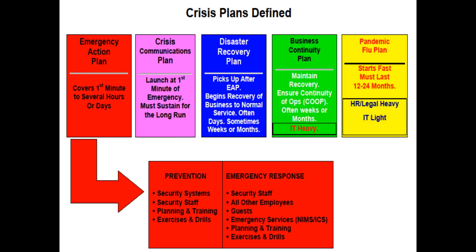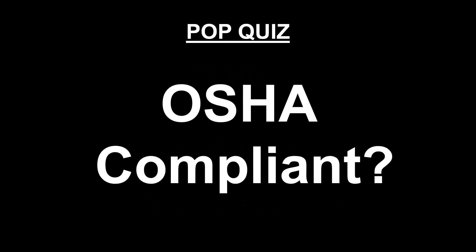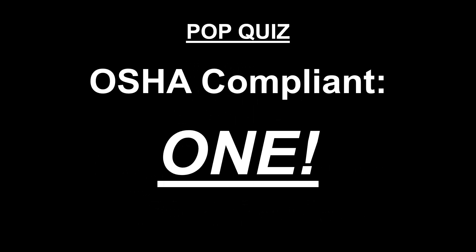The focus is on the emergency action plan — the first element in the continuum. Four key terms are defined by law: a plan is written, comprehensive, all-hazards, structured with goals, strategy, tactics, and defined roles; to train is to teach; to drill is to test; to exercise is to test rare skills using simulations. Under law, training is not drilling, drilling is not training, and false alarms aren't drills. Of 500 emergency plans reviewed over 14 years, only one was OSHA-compliant.